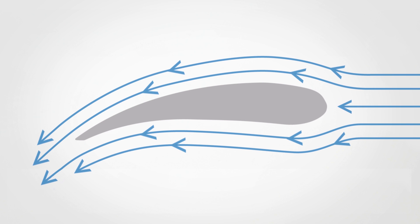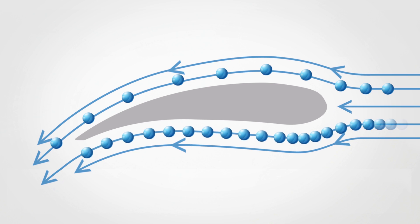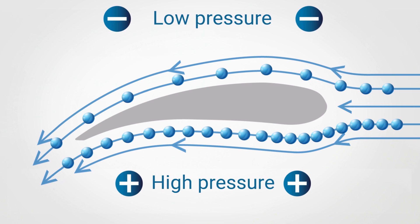Another theory describes this phenomenon not as a difference in speed, but as a difference in density between the upper and the lower airflow. In other words, the molecules of the upper airflow are more distant from each other while they travel across the wing surface, while the molecules of the lower airflow instead are closer to each other. The lower airflow would have more molecules than the upper airflow, which would create a difference in pressure between the two parts.